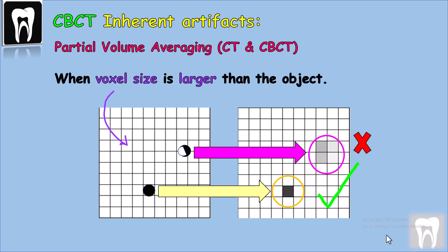For example, a voxel may contain both bone and adjacent soft tissue, but the display represents neither pure bone nor pure soft tissue density.